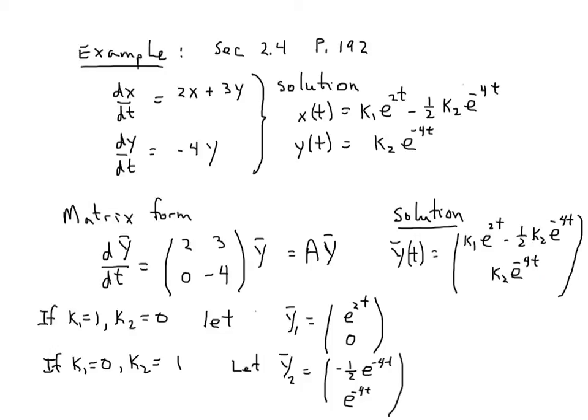I'm going to note two specific solutions. If k1 equals 1 and k2 equals 0, I have this. If k1 equals 0 and k2 equals 1, I have this. We refer to this as a general solution, and here are two specific solutions for specific values of k1 and k2.